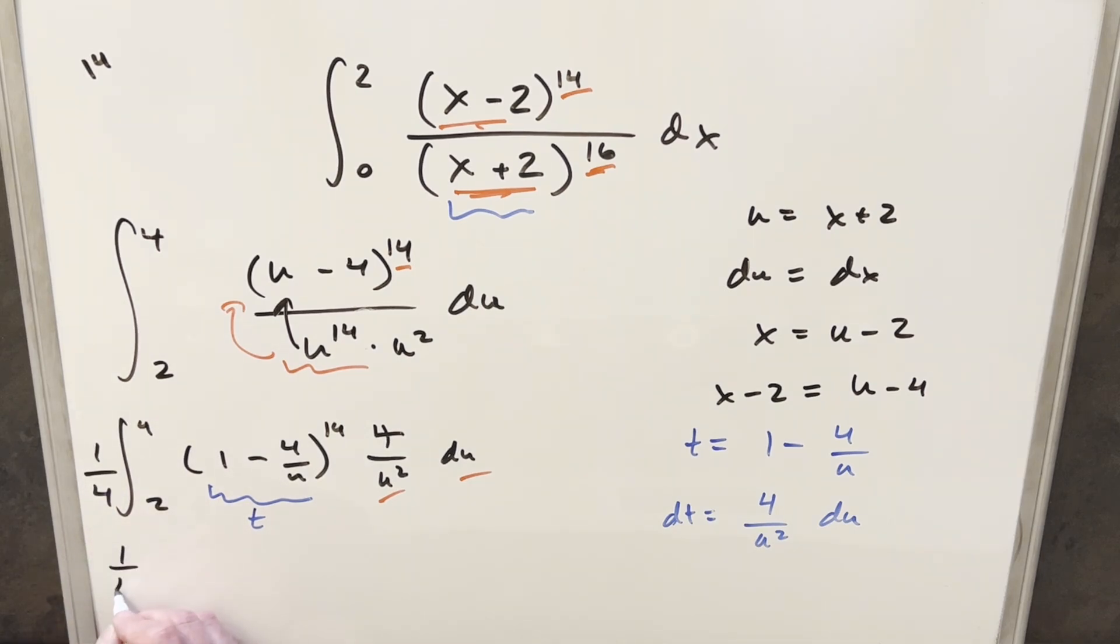So now I'll just go ahead with the substitution. We'll have this 1/4 here. Now, updating the bounds, plugging 4 in here, this is going to become 1 minus 4 over 4, 1 minus 1. This is just 0. Then plugging a 2 in here, we have 1 minus 4 over 2. 1 minus 2 gives me minus 1. Then this here is going to become just t to the 14th. And all this here is just going to be dt.